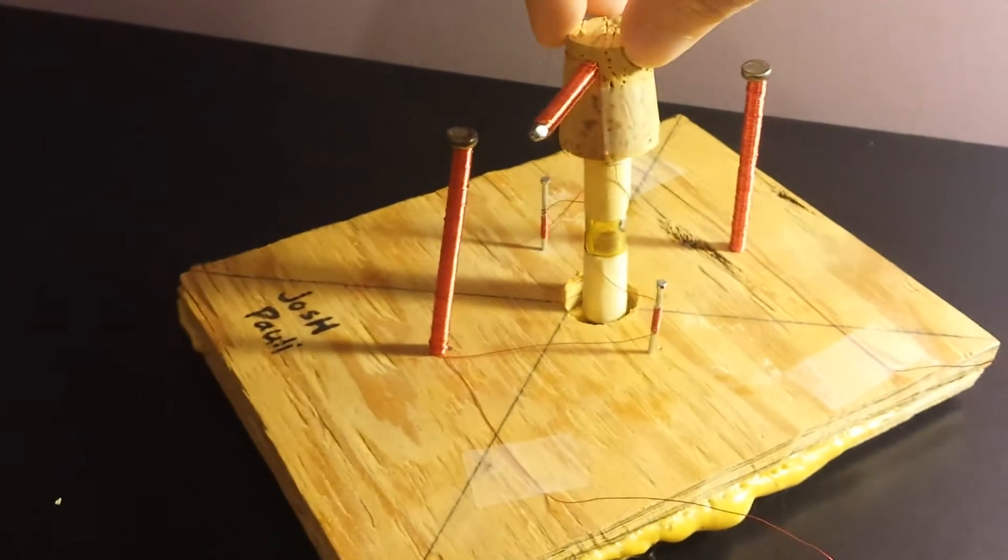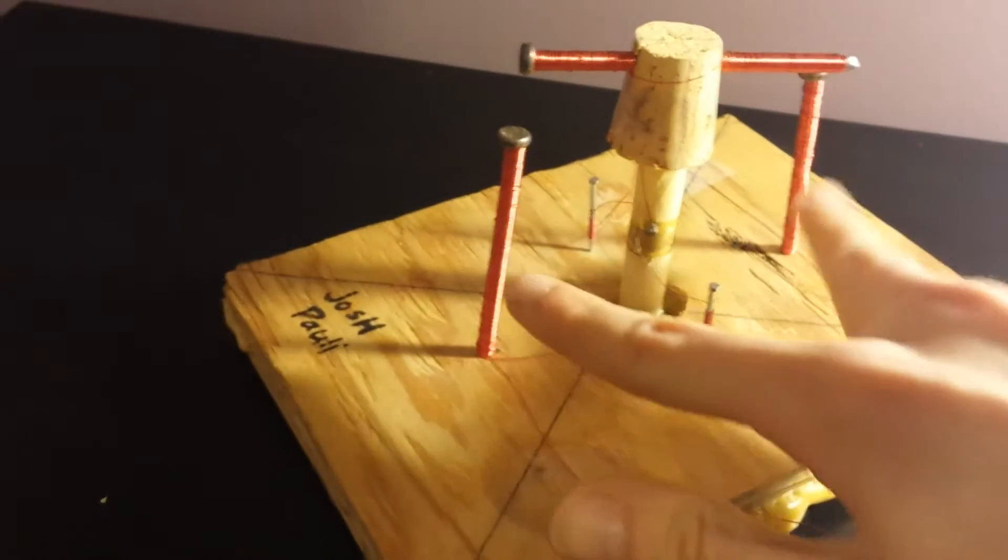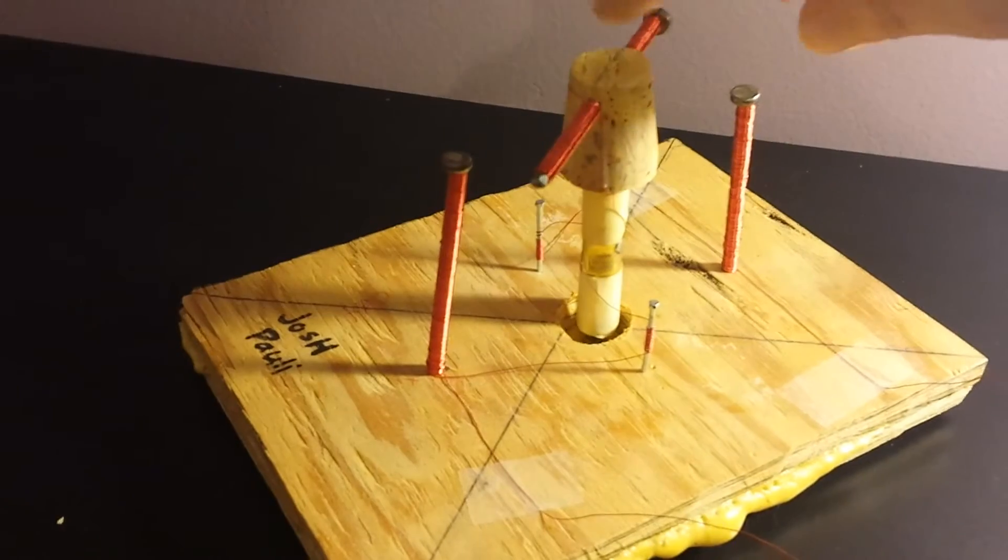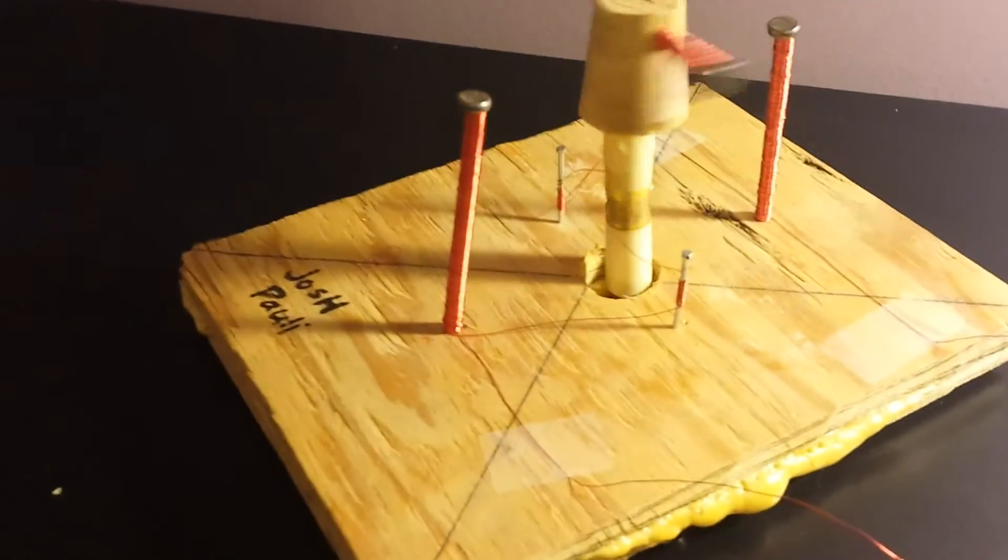That way the magnetic polarity in the nail up here will switch, and that happens every about half turn. So with both these nails having north magnetic poles and this nail spinning with switching poles, it drives the motor to spin.